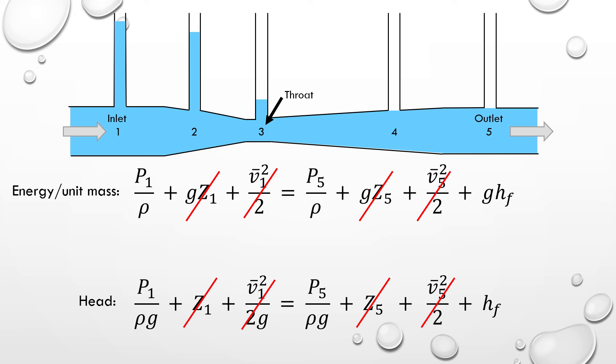especially as eddies are generated and energy is dissipated along the inner surface of the long, diverging section. Thus, the frictional loss term must be maintained in the equation.